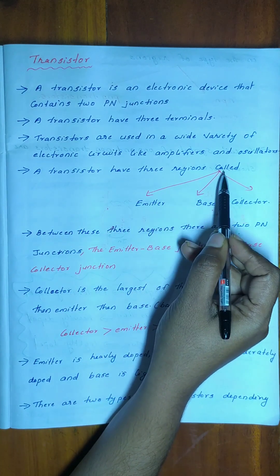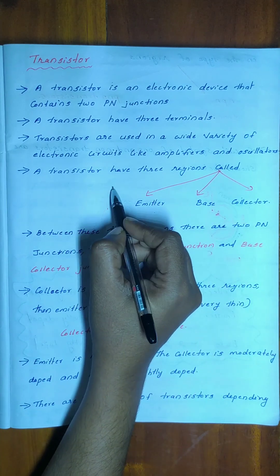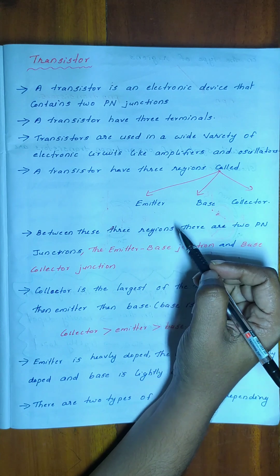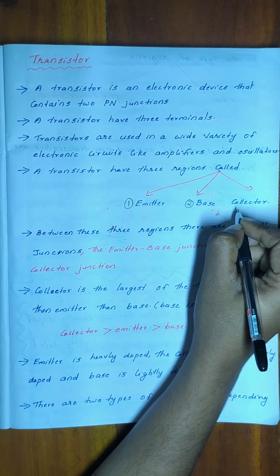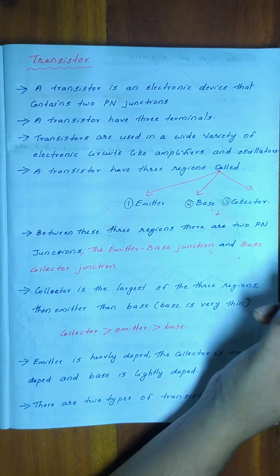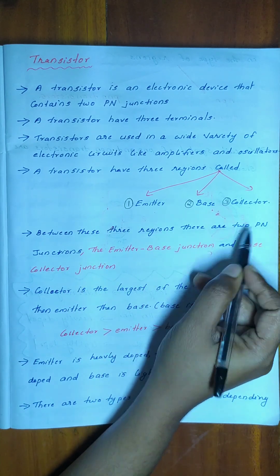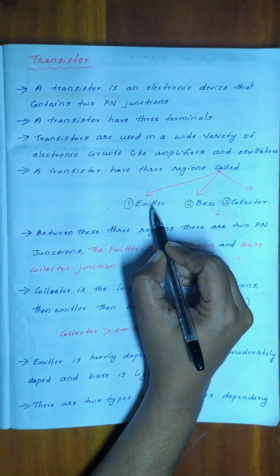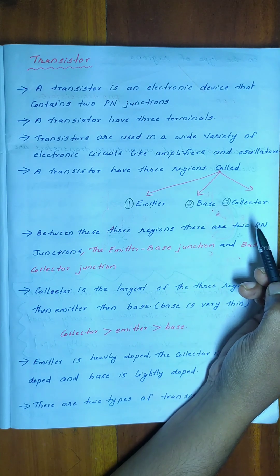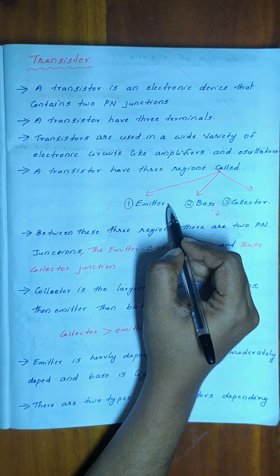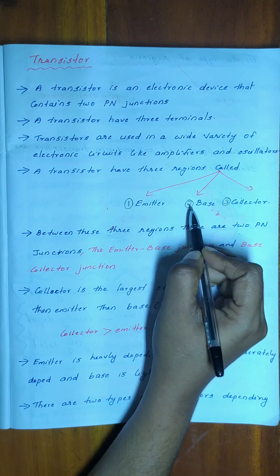A transistor has three regions called emitter, base, and collector. One transistor has three terminals called emitter, base, and collector. Between these regions, there are two PN junctions.